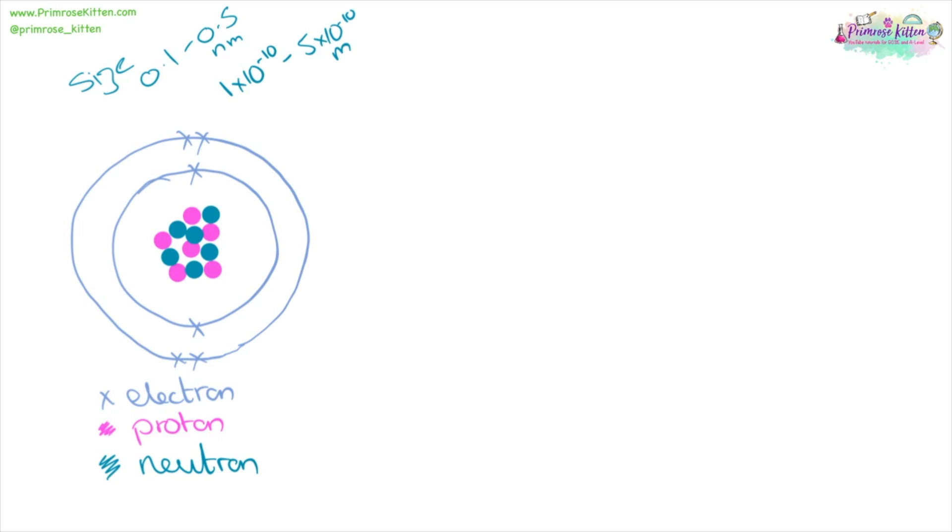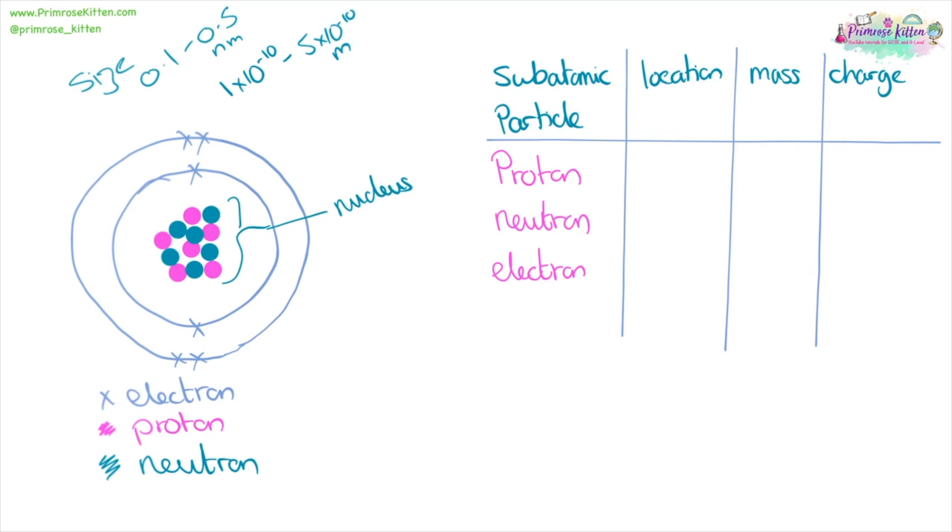Now inside our atom, we have protons and neutrons, and in the shells on the outside we have electrons. This bit in the middle here, this is called a nucleus. Protons and neutrons are located in the nucleus.